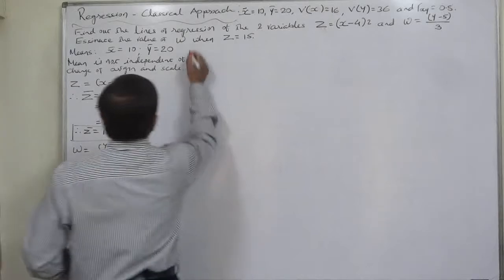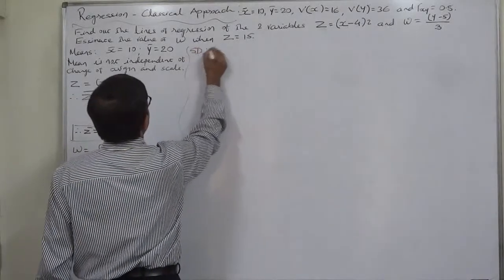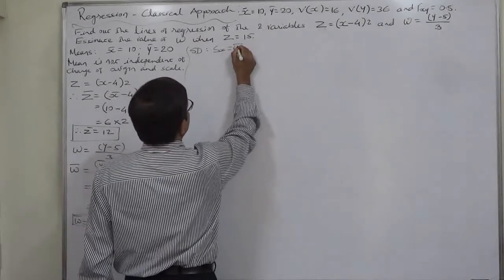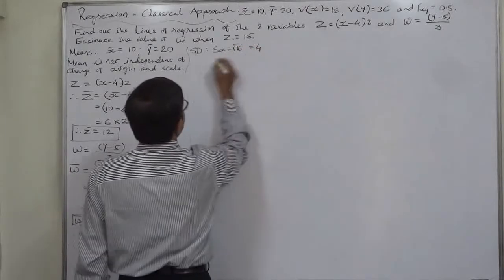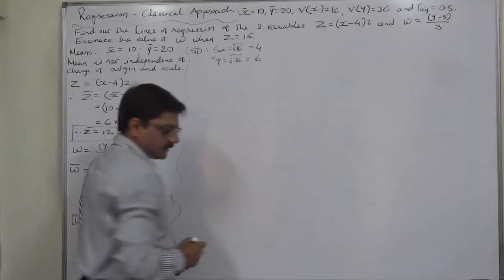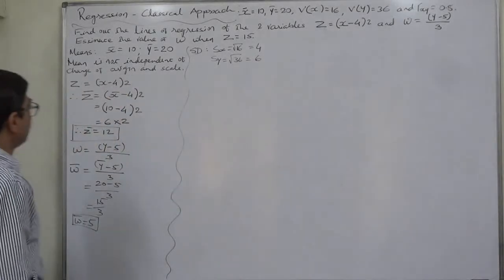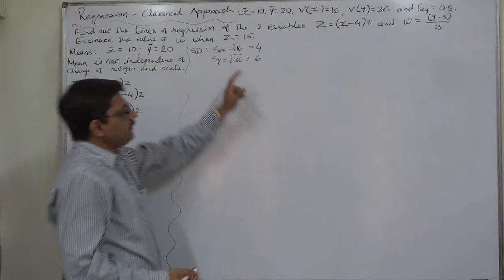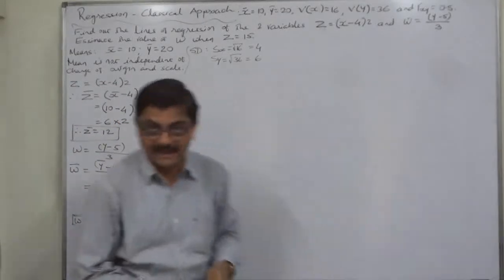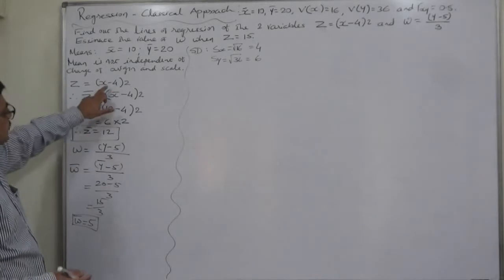Now standard deviations: Sx equals square root of 16, that is 4. Sy equals square root of 36, that is 6. Now, the property of standard deviation: standard deviation is independent of change of origin but not of scale. So we should not consider the change of origin at the time of calculating standard deviations of Z and W.